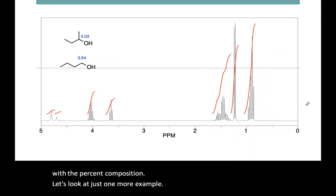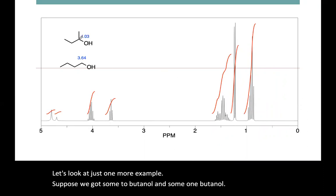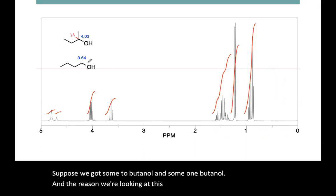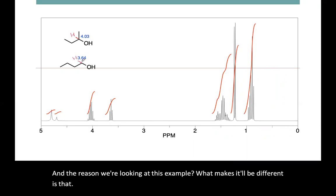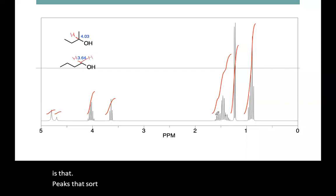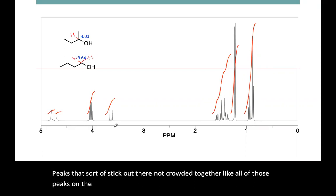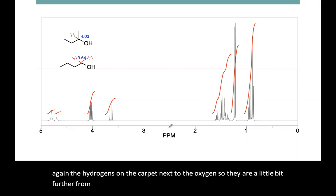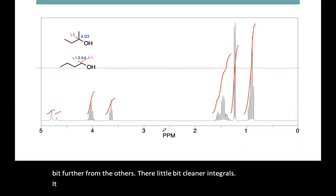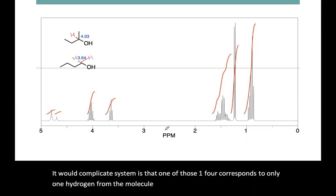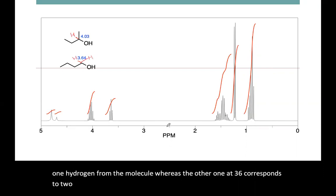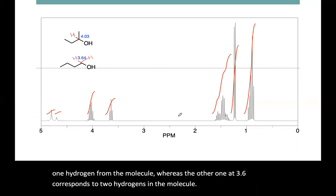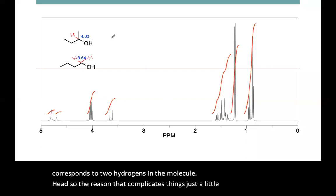Let's look at just one more example. Suppose we've got some two-butanol and some one-butanol. What makes this example a little different is that the peaks that sort of stick out — they're not crowded together like all of those peaks on the right. These ones over here around 3.5 and 4 ppm are again the hydrogens on the carbon next to the oxygen, so they are a little bit further from the others and have cleaner integrals. What complicates them is that one of those peaks corresponds to only one hydrogen from the molecule, whereas the other one at 3.6 corresponds to two hydrogens in the molecule. So we've got to normalize the integrals.